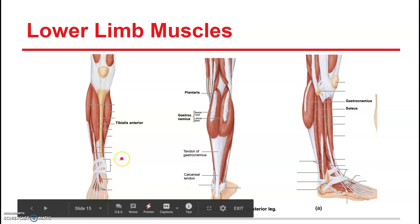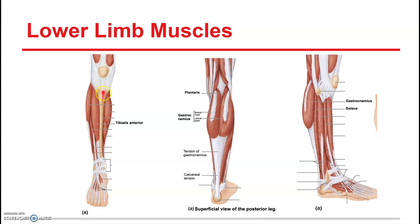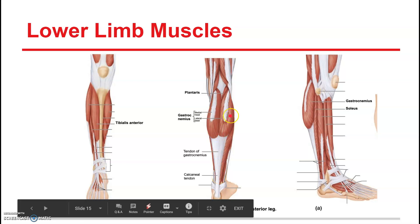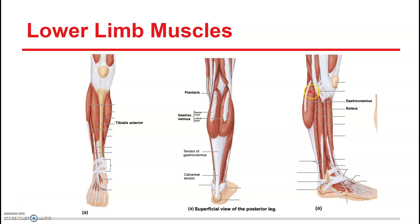Down to the lower leg muscles. Here we have the tibialis anterior, which is just lateral to the tibia. We have the gastrocnemius, which is your large superficial calf muscle. It attaches to the calcaneal tendon, also called the Achilles tendon. We also have the soleus, the muscle that's deep to the gastrocnemius. When you hear soleus, think of the fish sole or the sole of your foot — the soleus is a pretty large, flat muscle, which is why it has that name.